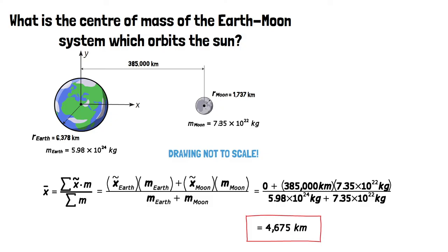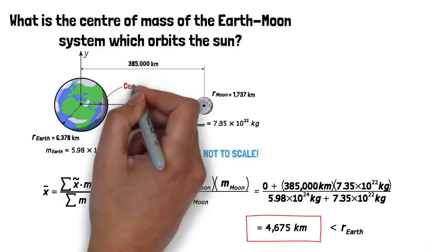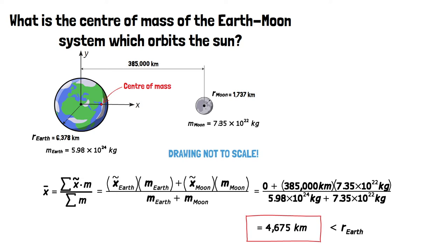Looking back at our problem, we can clearly see this value is less than the radius of the Earth. So the center of mass of the Earth-Moon system is located within the Earth, but closer to the Earth's surface than the center of the Earth.